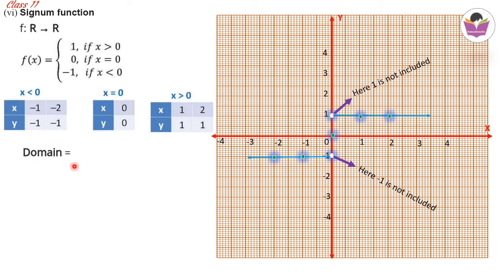The domain of the signum function is ℝ. The range is restricted to only three values: {−1, 0, 1}, since whatever x value is input, y will only ever take one of these three values.